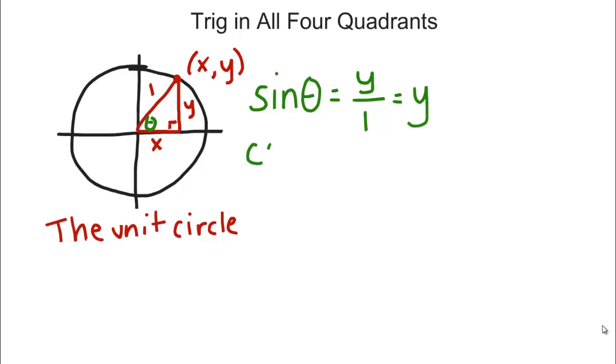Similarly, cosine of theta, we know from SOHCAHTOA, is adjacent over hypotenuse, which would be x over 1, or just x. So it's really convenient that the hypotenuse is always 1 for these triangles drawn in the unit circle, because anything divided by 1 is itself. That's why we love the unit circle.